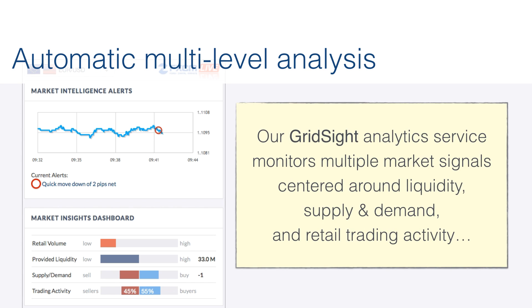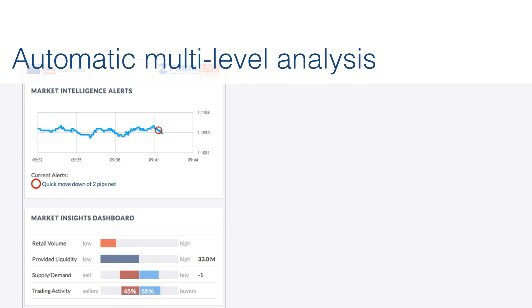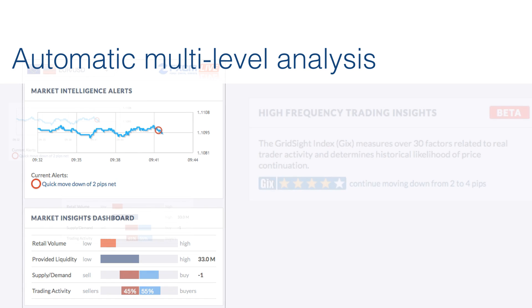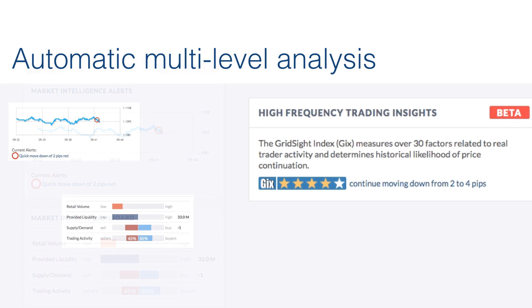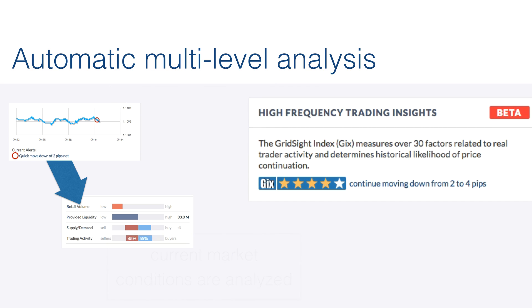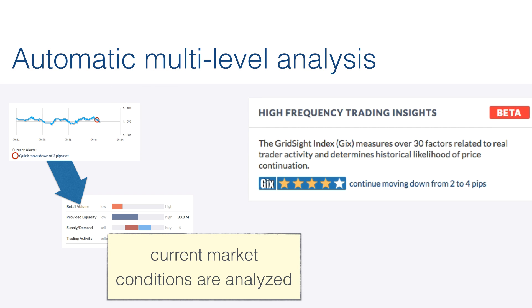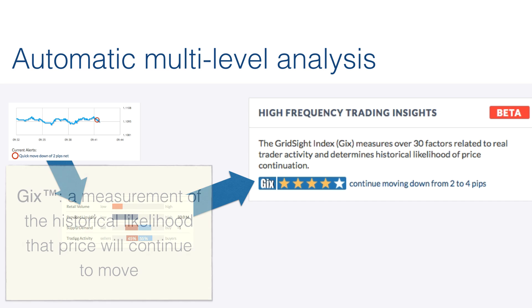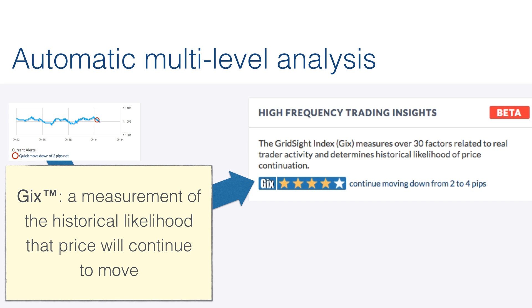The Gridside Analytics Service monitors multiple market signals centered around liquidity, supply and demand, and retail trader activity. Here we have the high-frequency trading insights. First, the system detects a quick price move. Then it looks at four of these key factors and 30 sub-factors to then decide the GIX, a measurement of the historical likelihood that price will continue up or down.